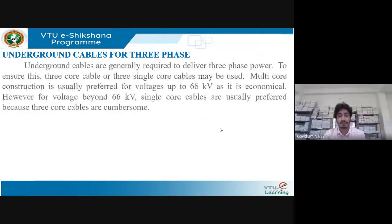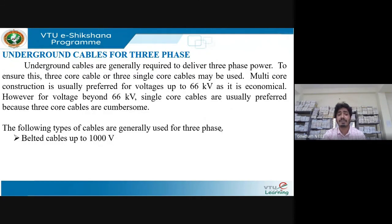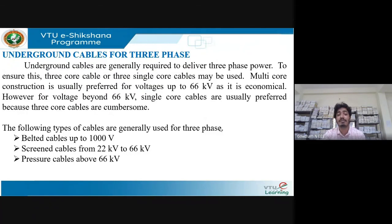For three-phase underground cables, the construction must be robust. Multi-core construction is preferred for voltages up to 66 kV as it is economical. For voltages beyond 66 kV, single core cables are preferred because three-core cables are more complex and mechanical/maintenance costs are very high. Types of three-phase cables include belted cables operating up to 1000 volts, screened cables for 22 kV to 66 kV, and pressure cables for above 66 kV.